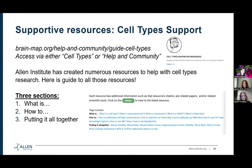As mentioned, we actually have a huge new catalog called Cell Type Support, which helps you figure out all the resources we've created to help your use of ABC Atlas and any other cell types work. There are three sections: what is, how to, and putting it together. This is all found on brain-map.org under the URL help-community/guide/cell-types. If you go to either the cell types main page or the help community page, you'll see this title with the little magnifying glass icon.